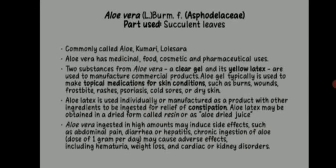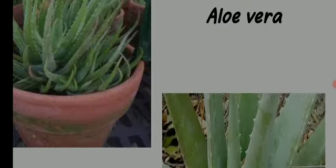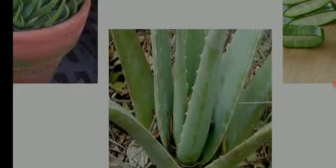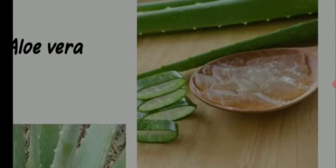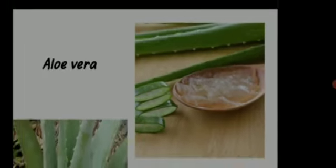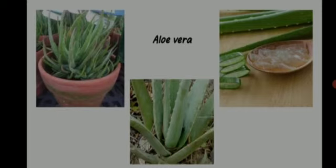Next, Aloe vera belongs to the family Asphodelaceae and the part used is the succulent leaves. You can see the plant with spinescent leaf margins, thick fleshy succulent leaves, the sectioned leaf, and the gel extracted out of the leaves. This plant is commonly called aloe, kumari in Sanskrit, or lolesara in Kannada. Aloe has medicinal, food, cosmetic, and pharmaceutical uses. Two substances — a clear gel and a yellow latex — are used to manufacture commercial products.